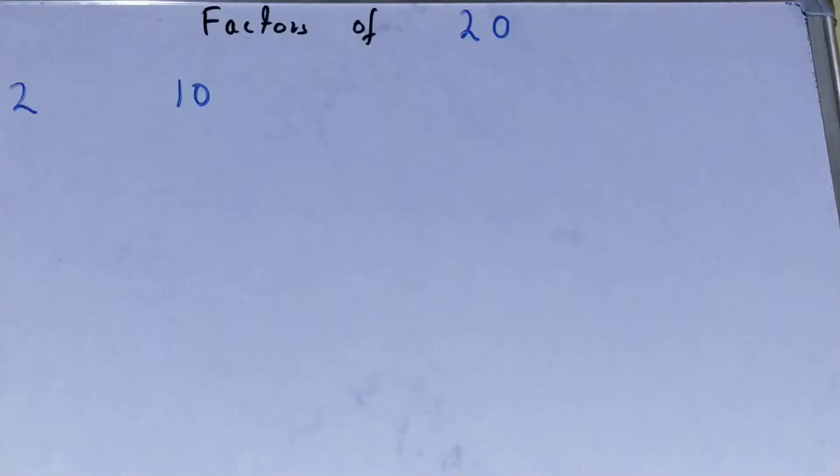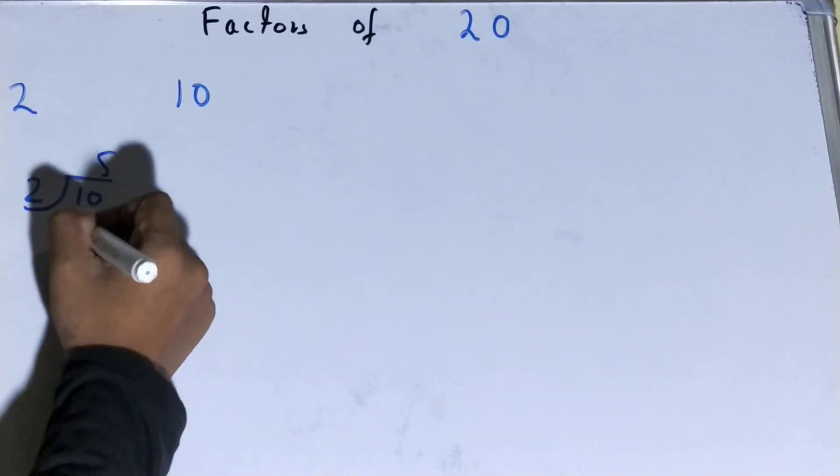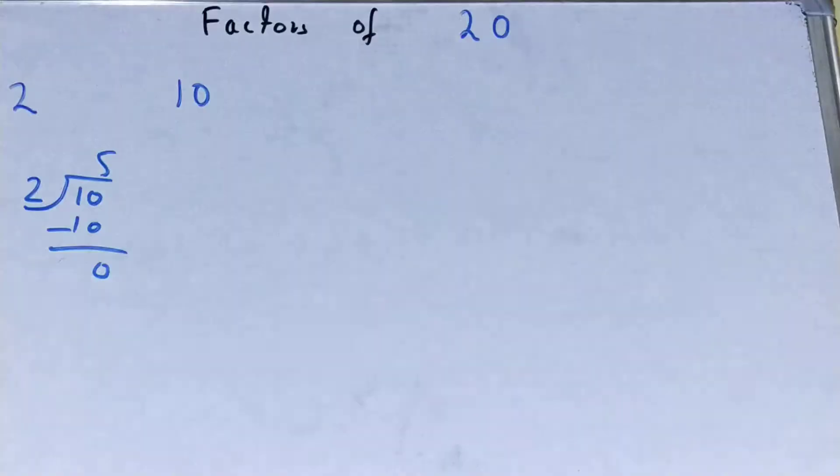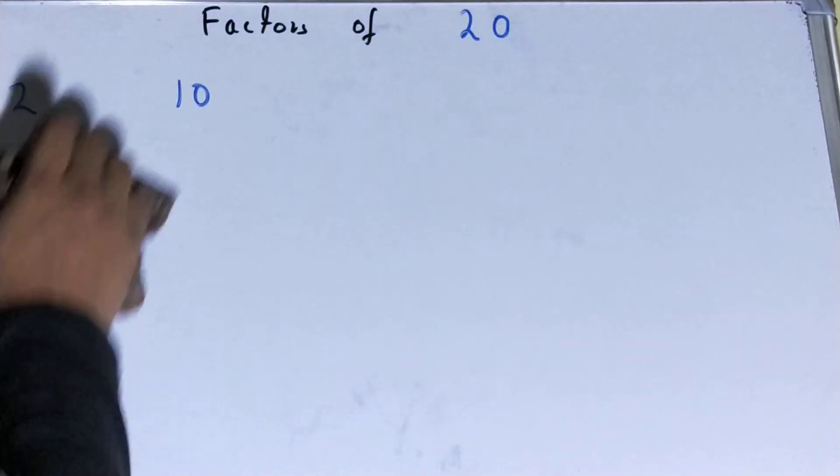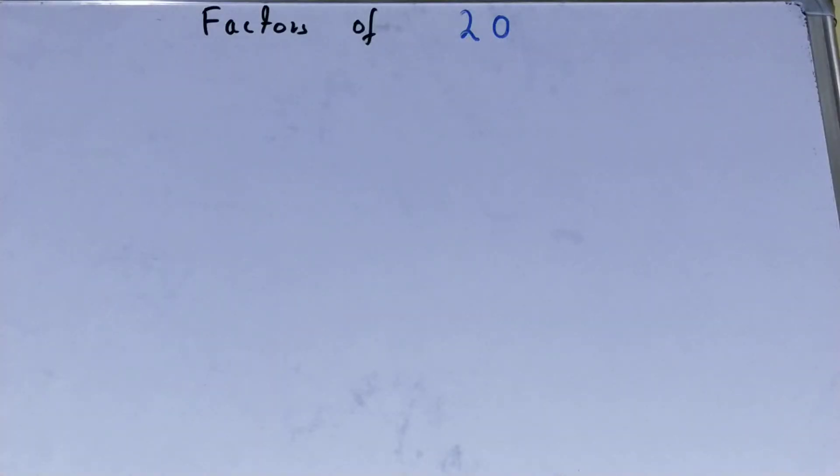...2 is a factor of 10 or not? By performing the division. If on performing division you get the remainder as 0, if and only if you get the remainder as 0, then the number 2 is a factor of given number 10. If you don't get the last remainder as 0, then that number is not a factor of the given number.